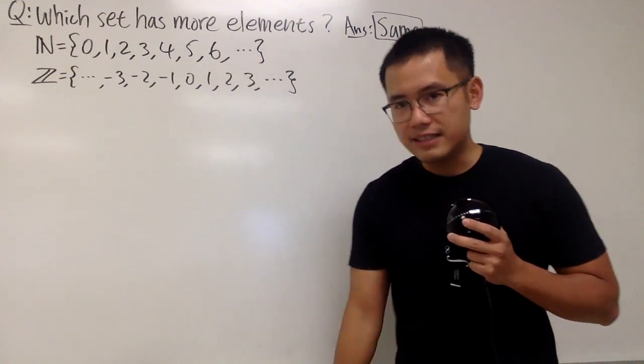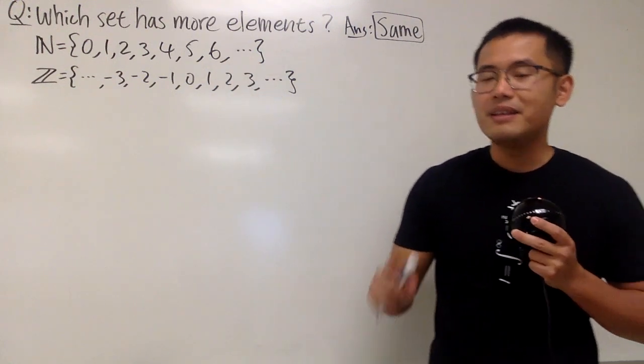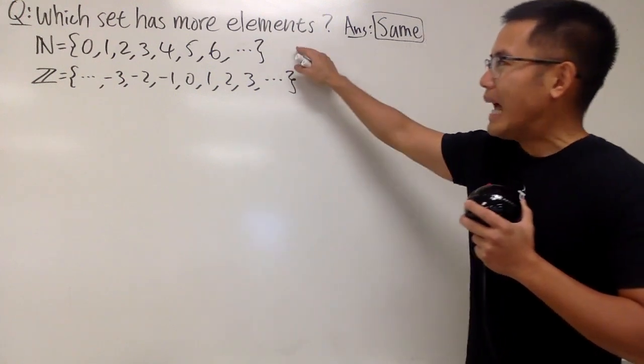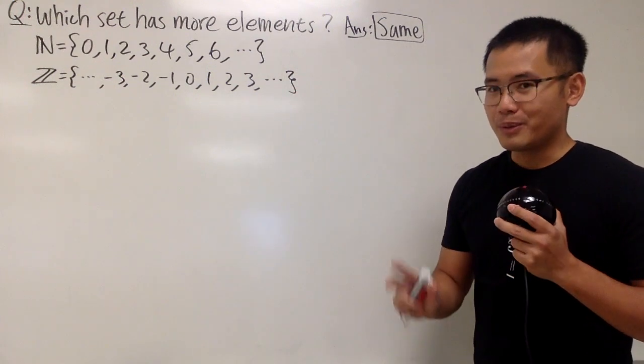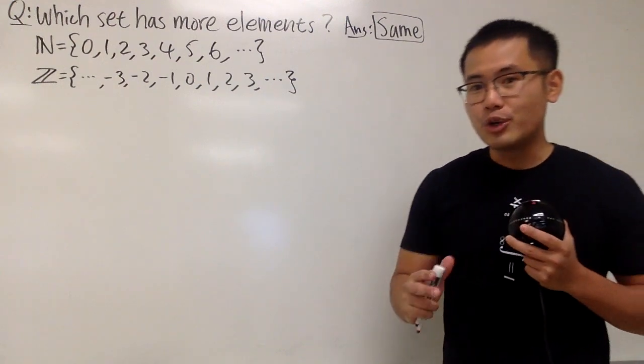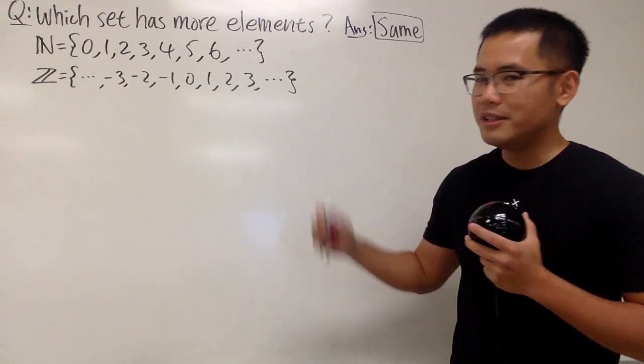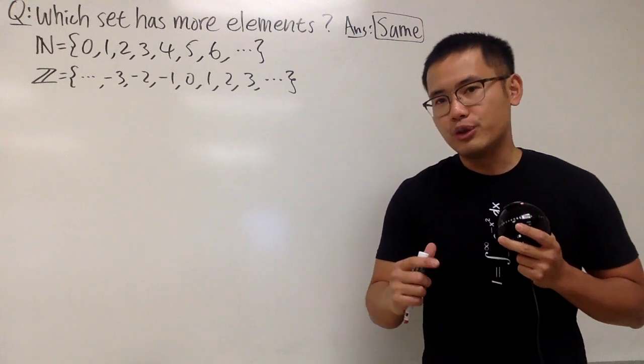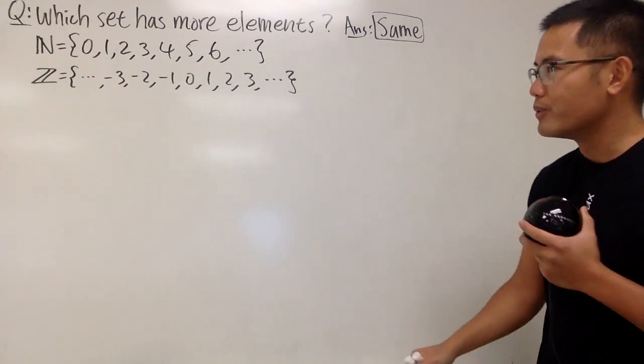both of them are infinite sets, and infinity is tricky. So we have to deal with infinity carefully. They do have the same number of elements, and let me just show you guys how we are going to reason this out. And in the next video, I'll show you guys the mathematical proof of the things that I'm about to show you.